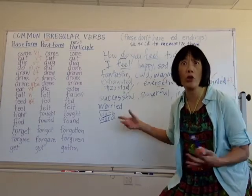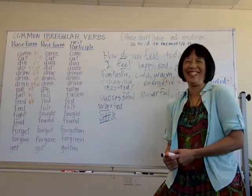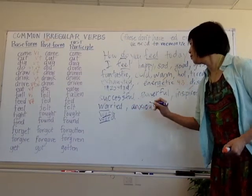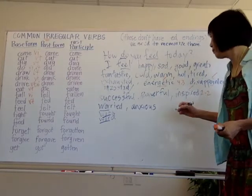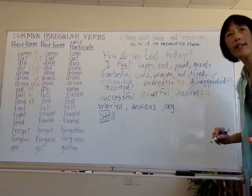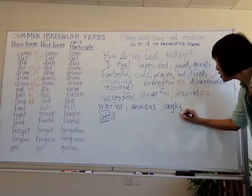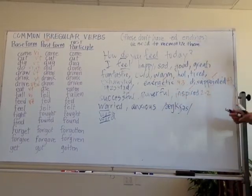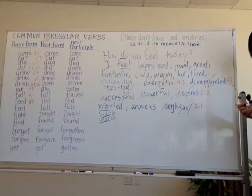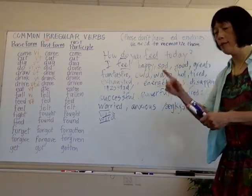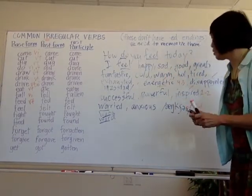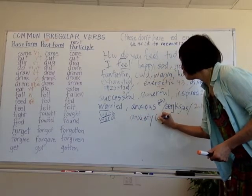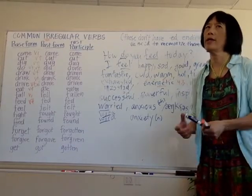I'm worried because I don't have enough words in English — that's why you're building up your vocabulary. Do you know the word 'anxious'? How do we pronounce it: anxious. The stress is on the first syllable: AX-ious. Maybe you know the noun form: anxiety. This is the adjective, and the noun is 'anxiety.'